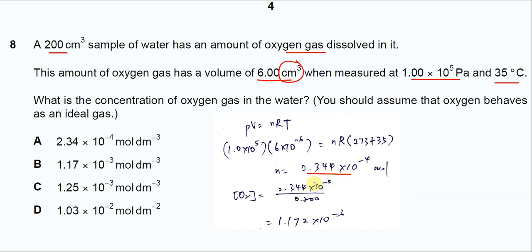So then you can get the concentration. Because concentration is moles per dm³, moles already calculated over the volume of water, 0.2 dm³. So you get B. That's all. Thank you.